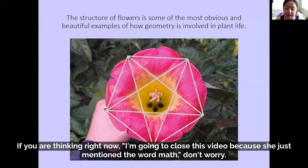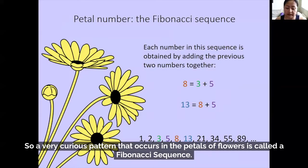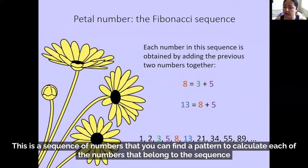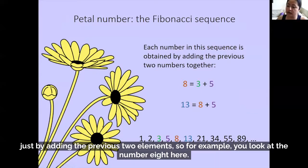If you're thinking right now I'm going to pause this video because she just mentioned the word math, don't worry. You'll be perfectly able to follow me through the rest of the talk because the only thing that we're going to be using here are numbers. So a very curious pattern that occurs in the petals of flowers is called the Fibonacci sequence. This is a sequence of numbers where you can calculate each number by adding the previous two elements.